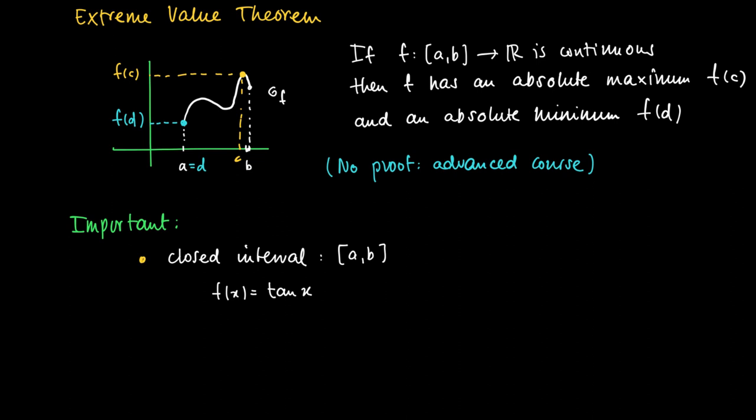So suppose we look at f(x) equals the tangent of x. This is clearly a continuous function on (-π/2, π/2), if we leave out the -π/2 and π/2 on which the function is not defined.